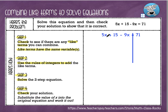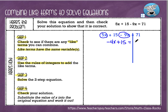First thing is we are going to check and see if we have any like terms to add together. I see two terms that have an x — I see a 5x and I see a negative 9x. When I add a positive 5 plus a negative 9, that gives me a negative 4x. I'm going to bring down the plus 15 and bring down equals 71. Notice I drew a line through my equal sign to separate what's happening on one side from the other — it helps keep your equation a little bit more organized.